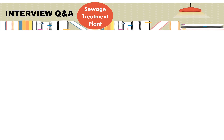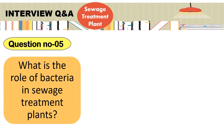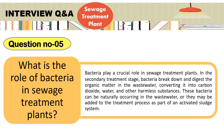We are at the end of our video, and here we have question number 5: What is the role of bacteria in sewage treatment plants? Bacteria play a crucial role in sewage treatment plants. In the secondary treatment stage, bacteria break down and digest the organic matter in the wastewater, converting it into carbon dioxide, water and other harmless substances. These bacteria can be naturally occurring in the wastewater or they may be added to the treatment process as part of an activated sludge system.